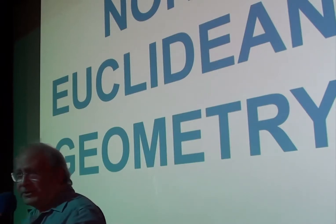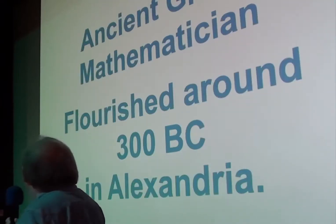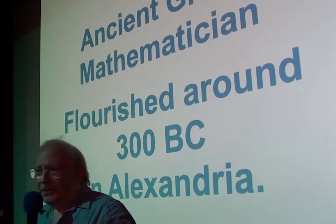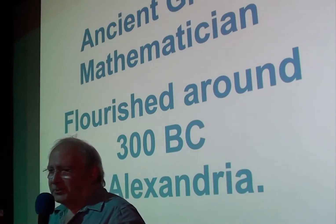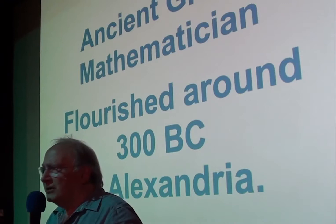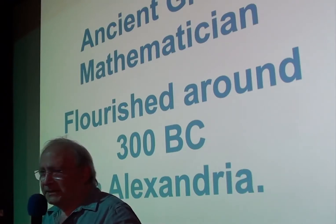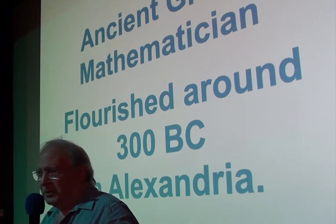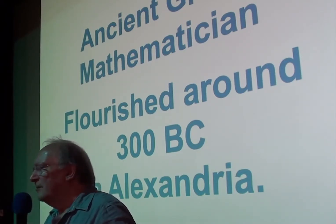As you can gather, I love maths and I think it's the most aesthetically beautiful subject. And I'm particularly interested in the history and philosophy of maths. And I'm particularly interested in this guy Euclid. Now Euclid, he was an ancient Greek mathematician. We don't know his exact dates, but we know he flourished around about 300 BC in Alexandria.